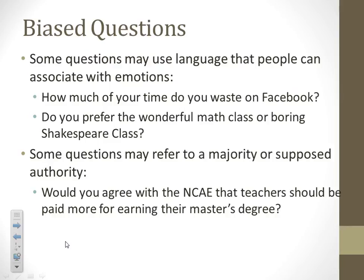A question may refer to a majority or a supposed authority. For example: 'Would you agree with the NCAE — a teaching association — that teachers should be paid more for earning their master's degree?' When you throw in that reference to the NCAE, you're making people think there's an authority figure that believes that, so maybe they should too. Instead, just ask: 'Do you believe that teachers should be paid more for earning their master's degree?' Asking people whether they agree with a certain authority puts bias in your question.